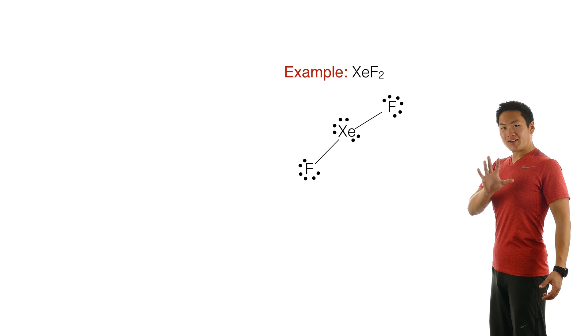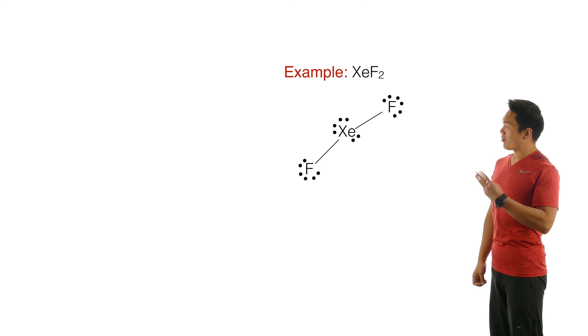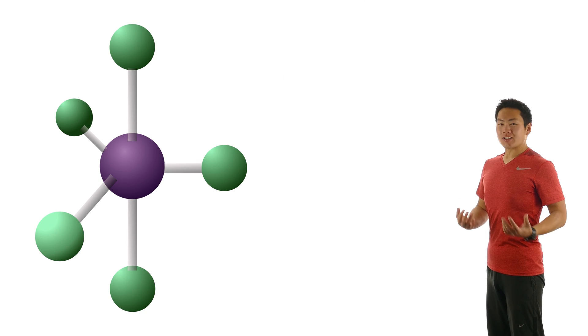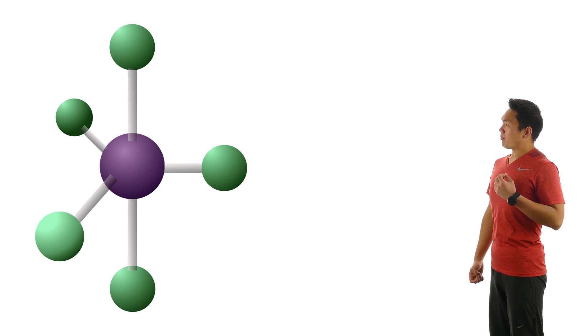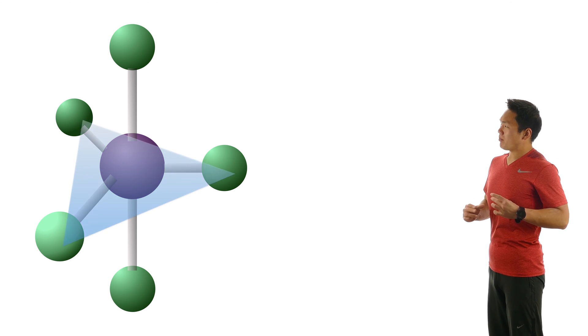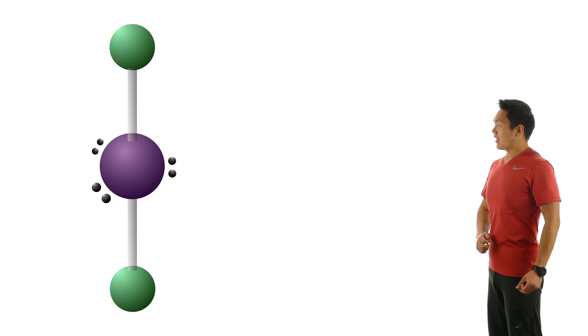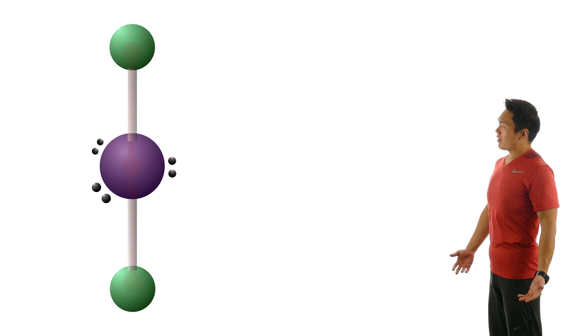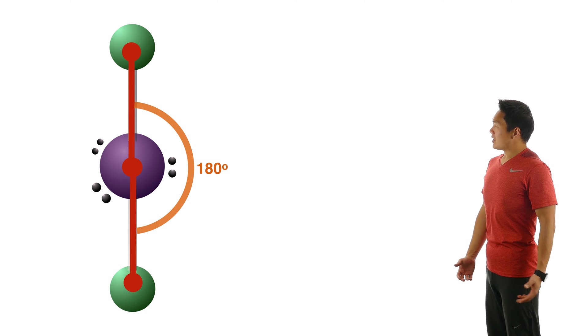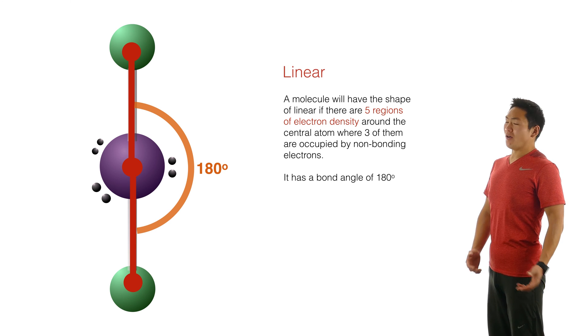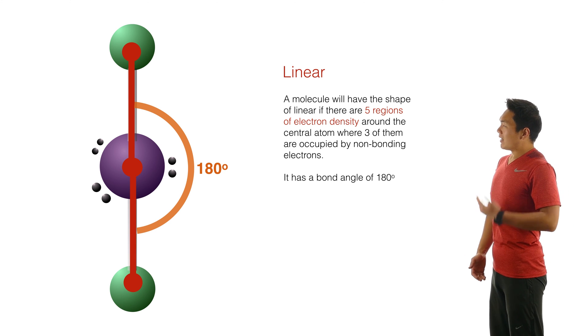Let's say you still had five regions of electron density, but this time you had three lone pairs. And just like before, we replaced the bonding regions from the triangular plane with lone pairs of electrons. And you can see that all I'm left with now is the bonds in the vertical direction. This means the only thing I could possibly have as a shape is linear, and the only angle I have left is 180 degrees.